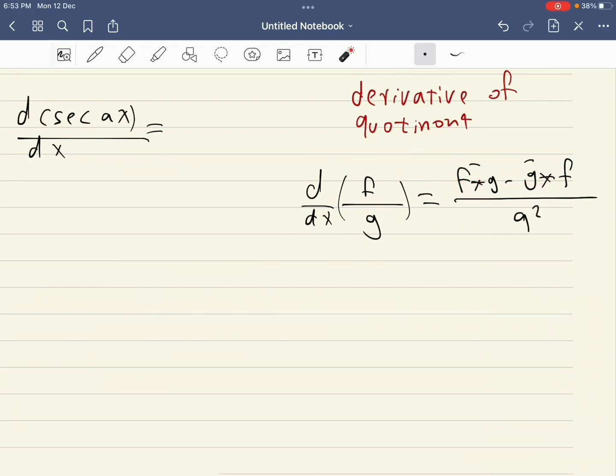That is the quotient rule. Let's apply this to secant of ax. We know that secant of ax can be written as d/dx of one over cosine ax. Now one is f, and cosine ax is g.